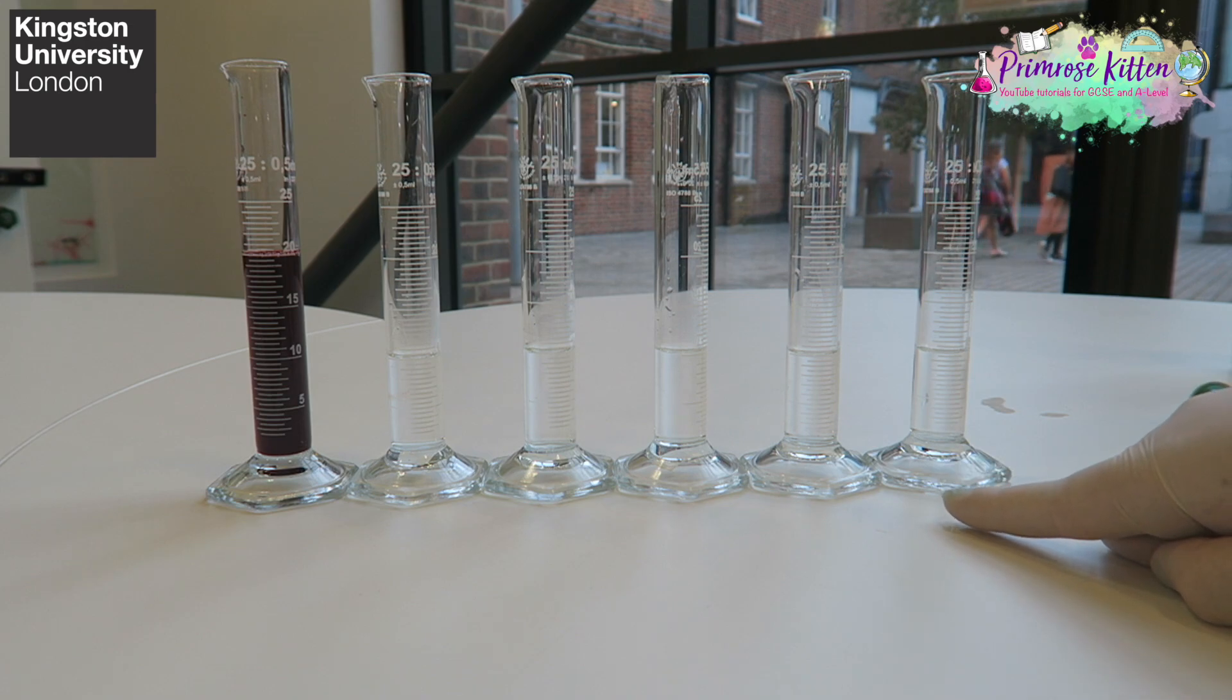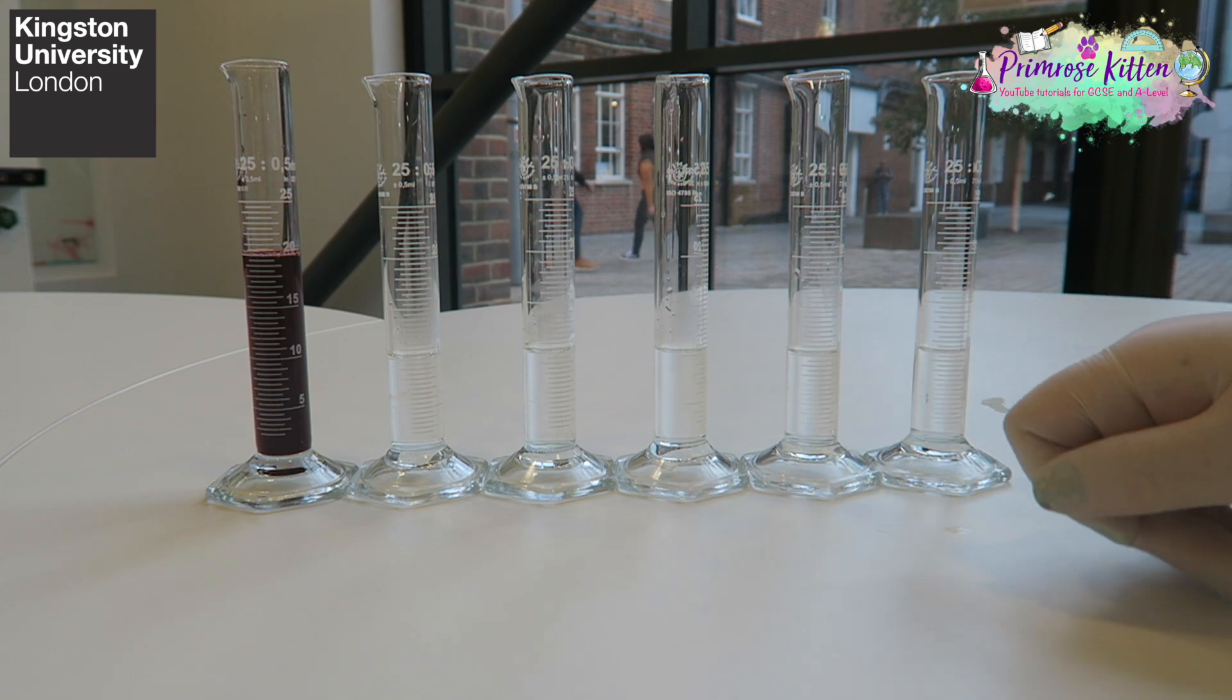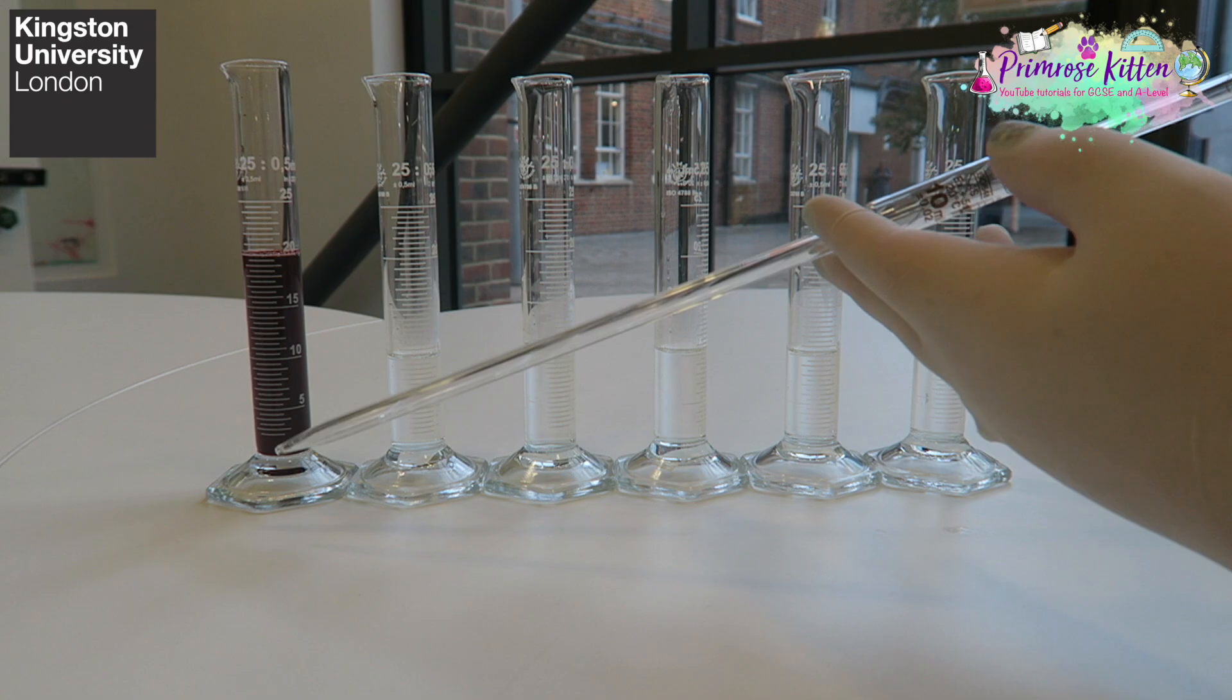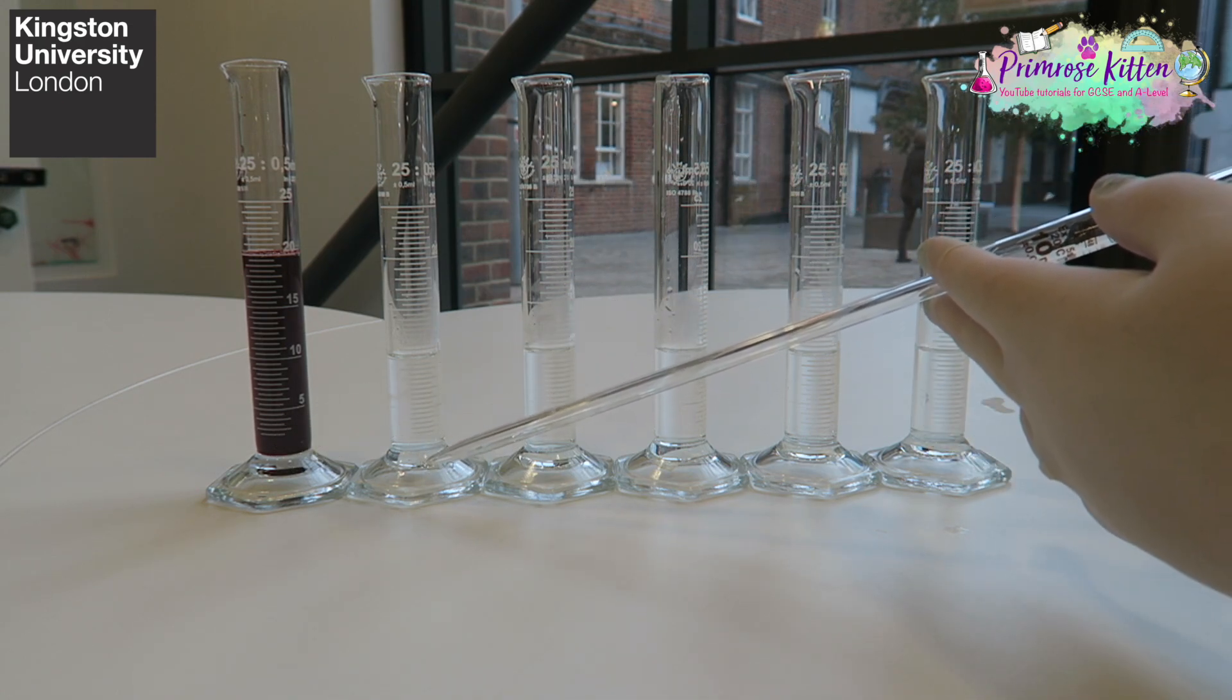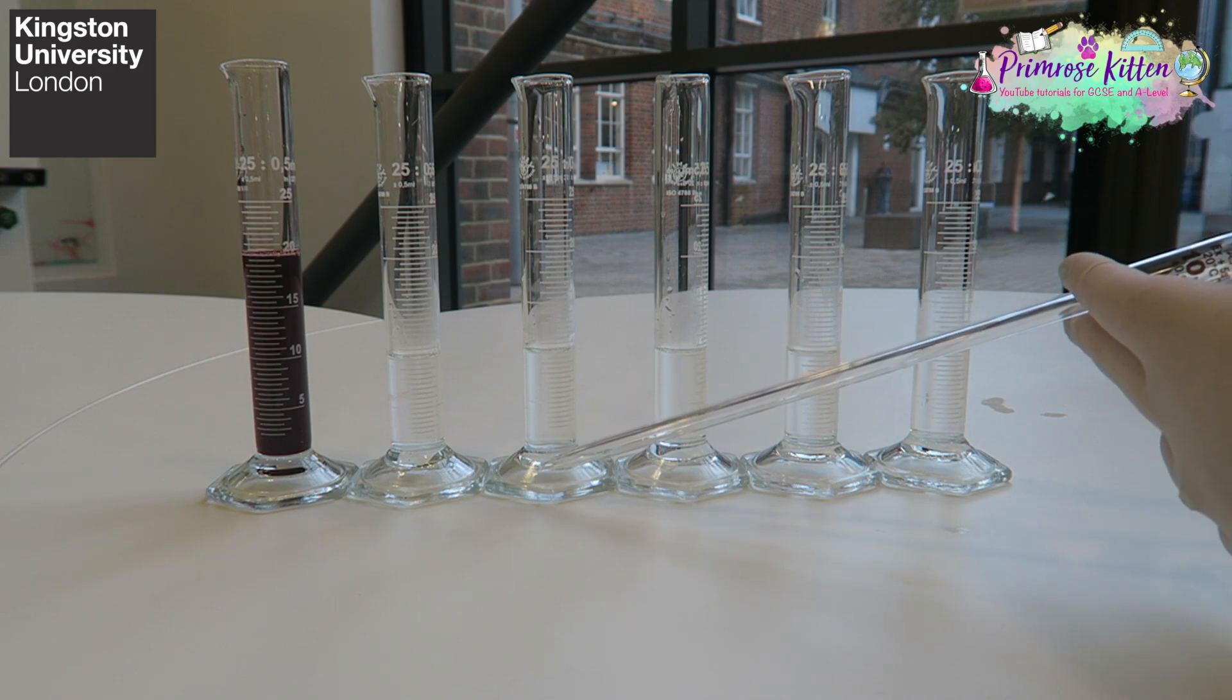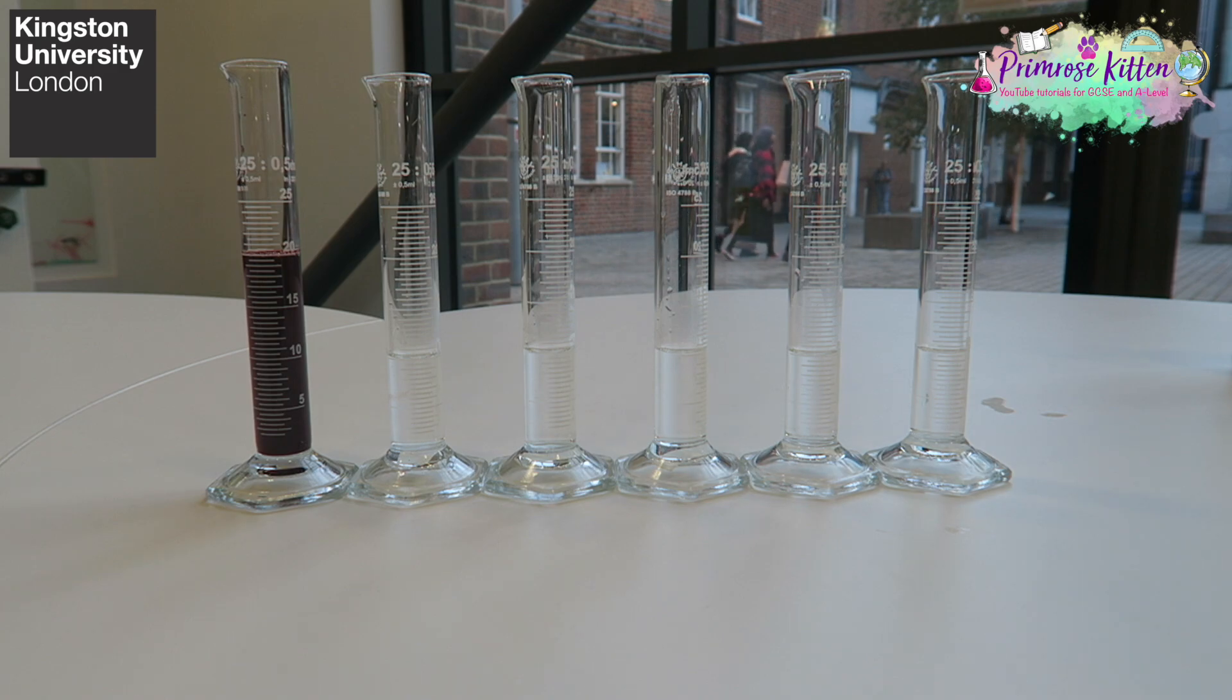There's 10 centimeters cubed of distilled water in each of these up to the line with the bottom of the meniscus. I'm then going to use a pipette to take 10 centimeters cubed from here, put it into here, mix it. 10 centimeters cubed from here, into here, mix it. 10 centimeters cubed from here, into here, mix it. So we're going down. The concentration is going down by half every single time.